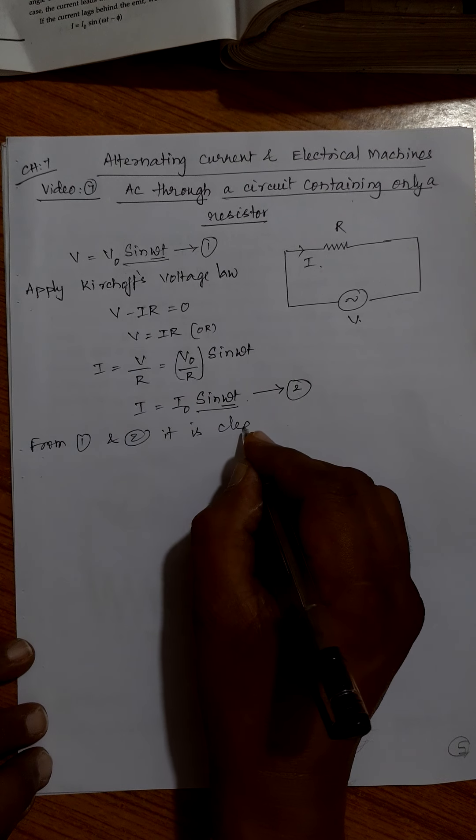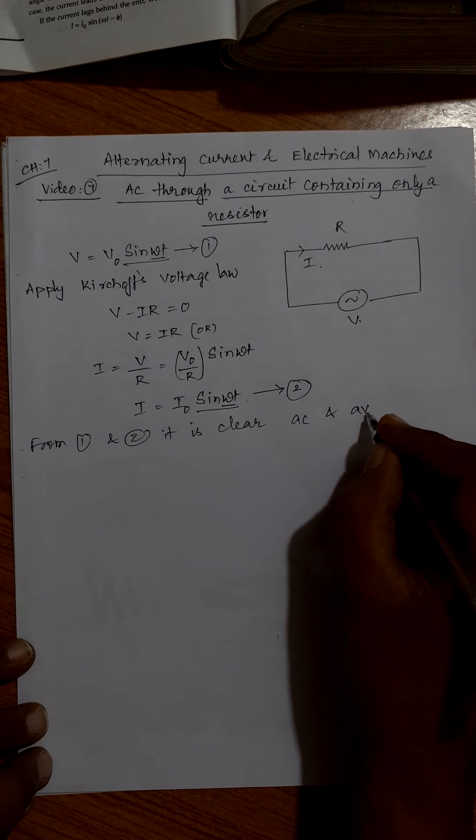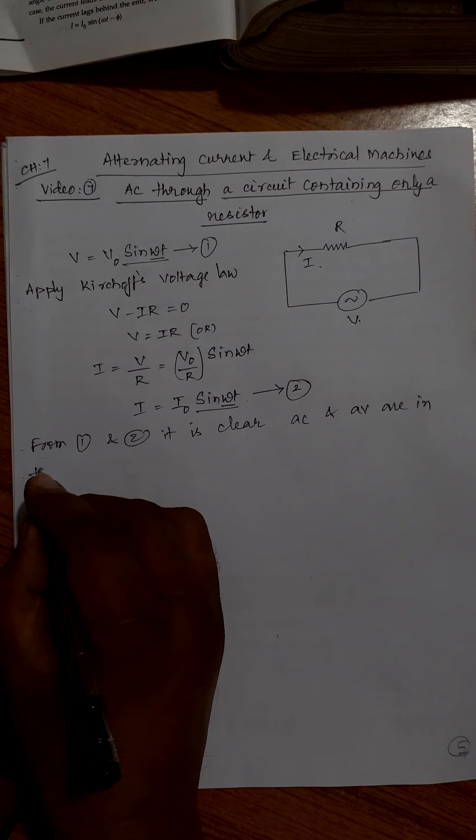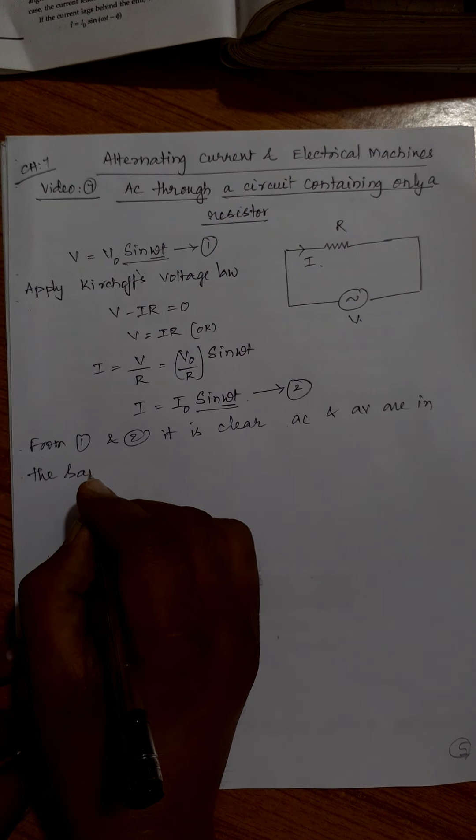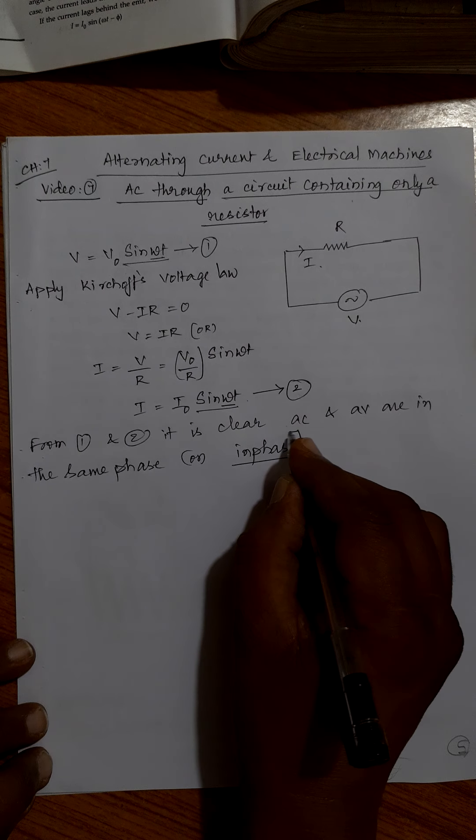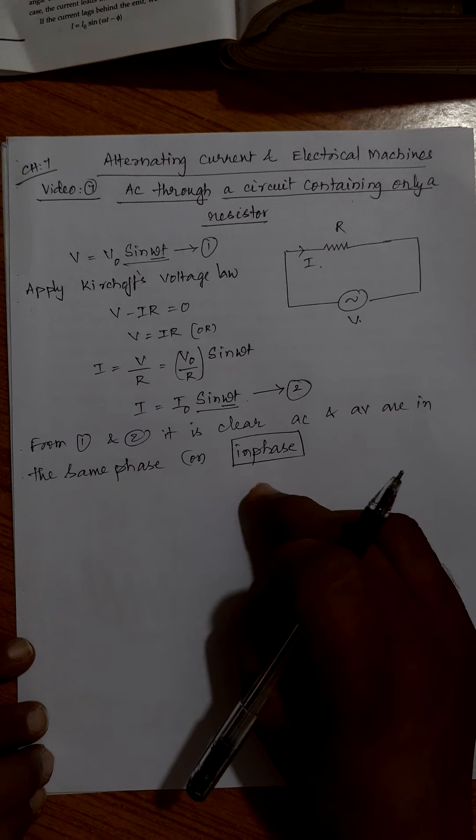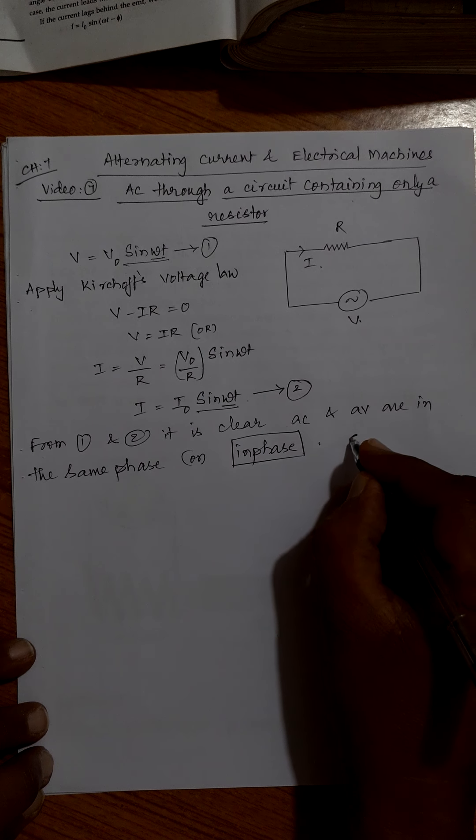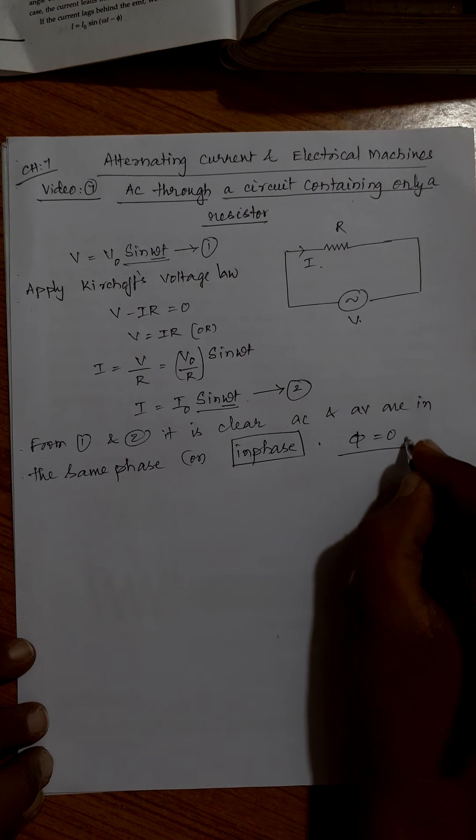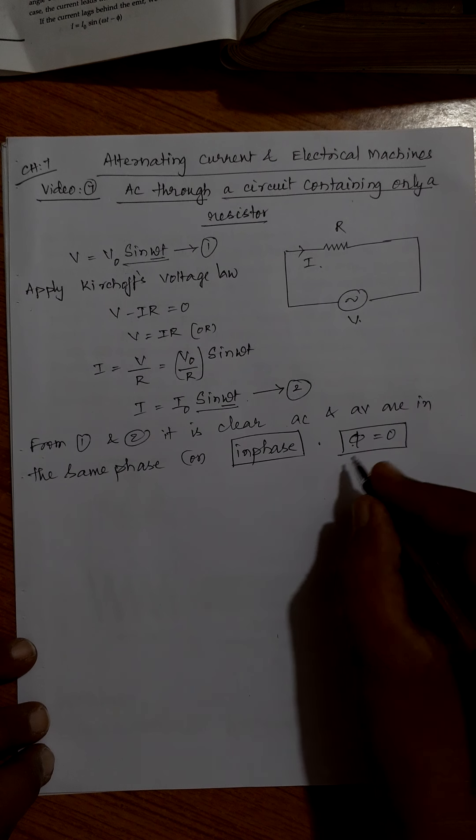So from equations 1 and 2 it is clear that alternating current and alternating voltage are in the same phase. In phase should not be split as two words, it is to be taken as a single word, in phase. That means phase difference between them is zero.